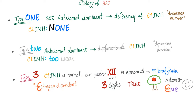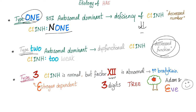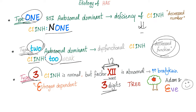Three types of hereditary angioedema. Type 1: deficiency of C1 inhibitor — decrease in number. Type 2: the number is okay but there is decreased function, so C1 inhibitor is too weak. Type 3: C1 inhibitor is normal in number and function; however, factor 12 has gone rogue and is overactivated.